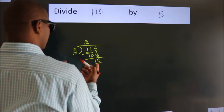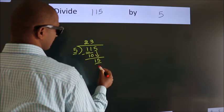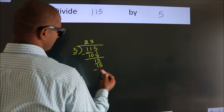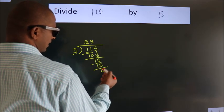When do we get 15 in 5 table? 5 threes, 15. Now, we should subtract. We get 0.